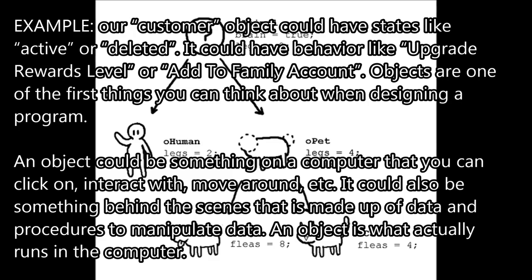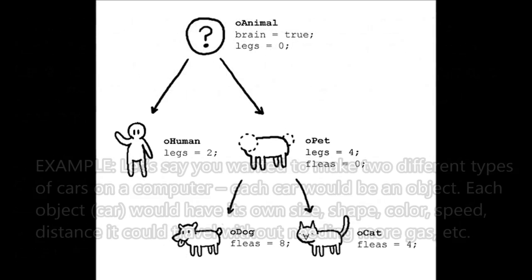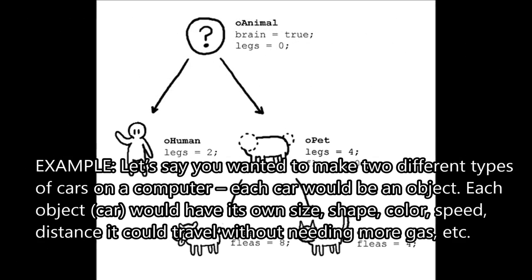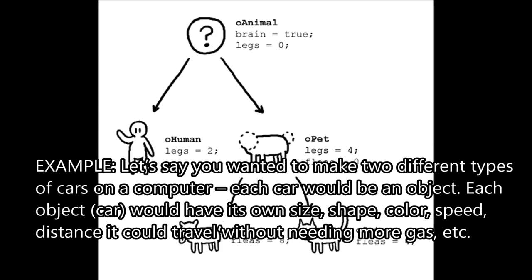An object is what actually runs in the computer. For example, if you wanted to make two different types of cars on a computer, each car would be an object. Each object — each car — would have its own size, shape, color, speed, distance it could travel without needing more gas, etc.